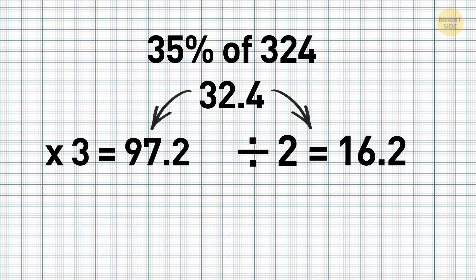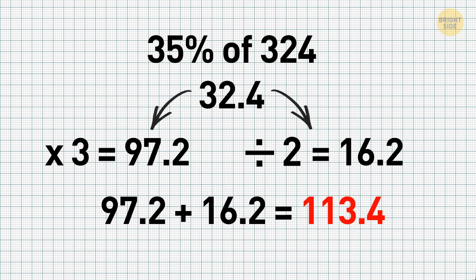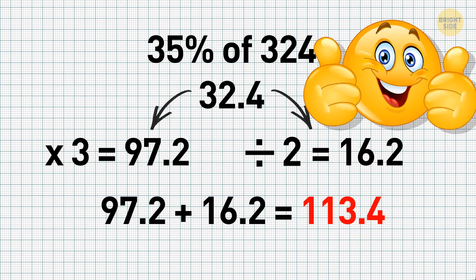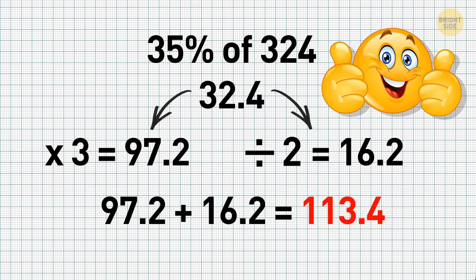Second, divide the same number by 2, resulting in 16.2. And now, all that's left to do is add these numbers. 97.2 plus 16.2 equals 113.4. That's your answer. 35% of 324 is 113.4.